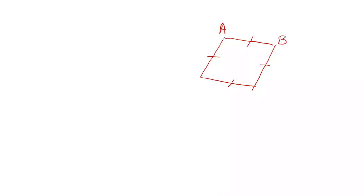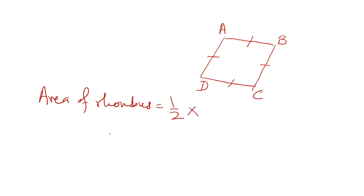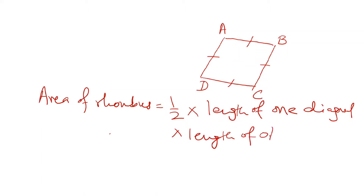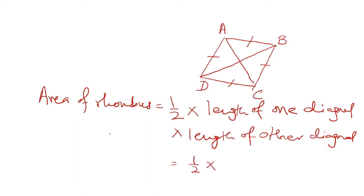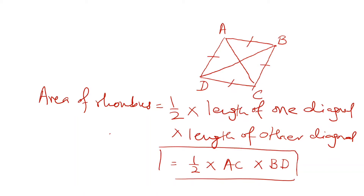So here quadrilateral ABCD is a rhombus, and the area of a rhombus equals half into the length of one diagonal into the length of the other diagonal. You can see in this figure, AC is one diagonal of rhombus ABCD, and BD is the other diagonal. So area of quadrilateral ABCD equals one upon two into diagonal one (AC) into diagonal two (BD). This is the formula for the area of a rhombus.